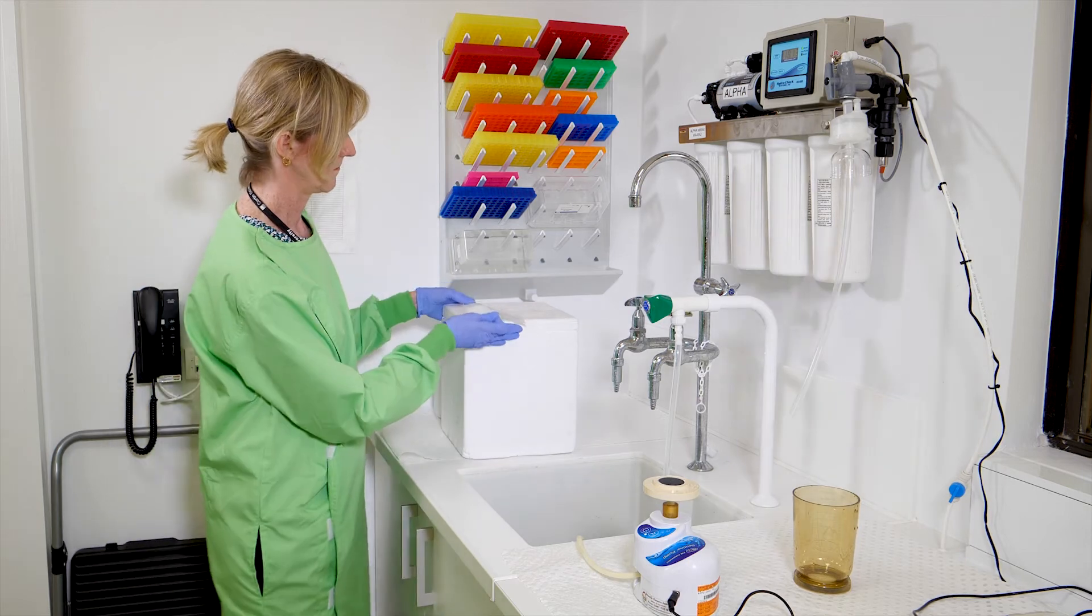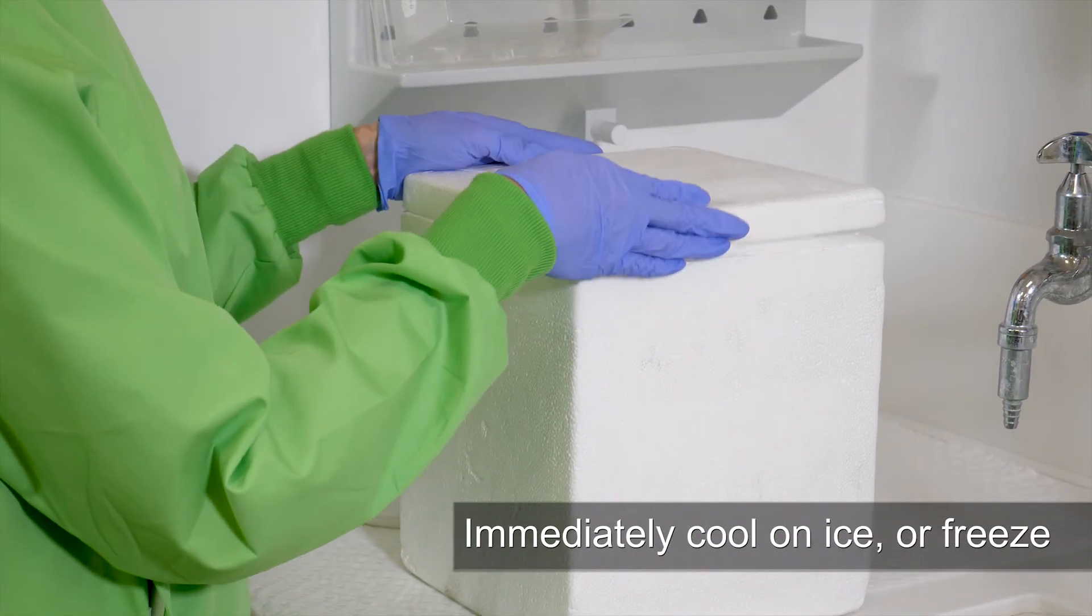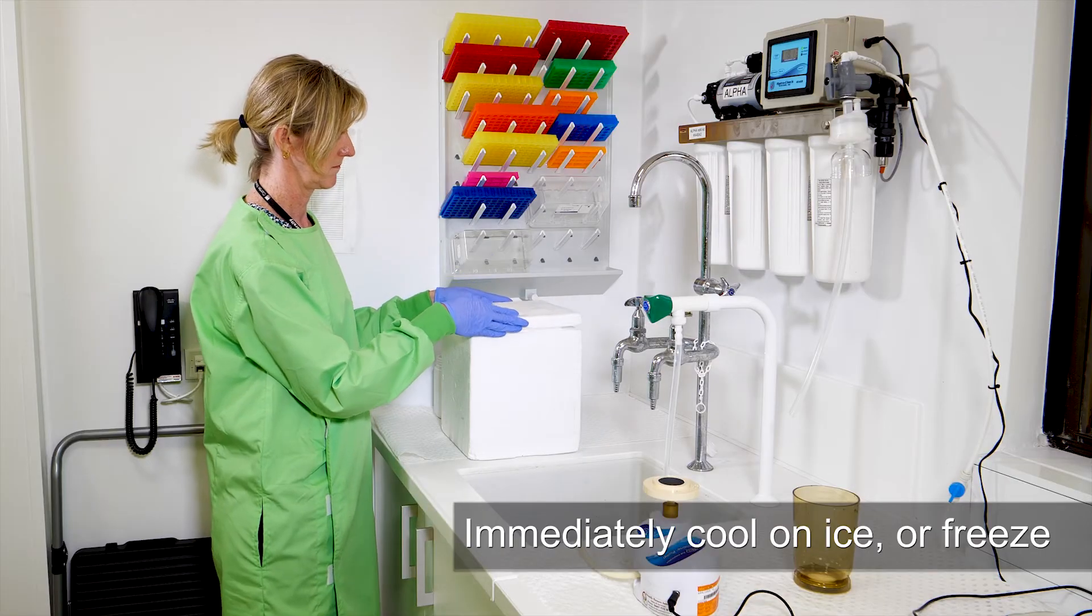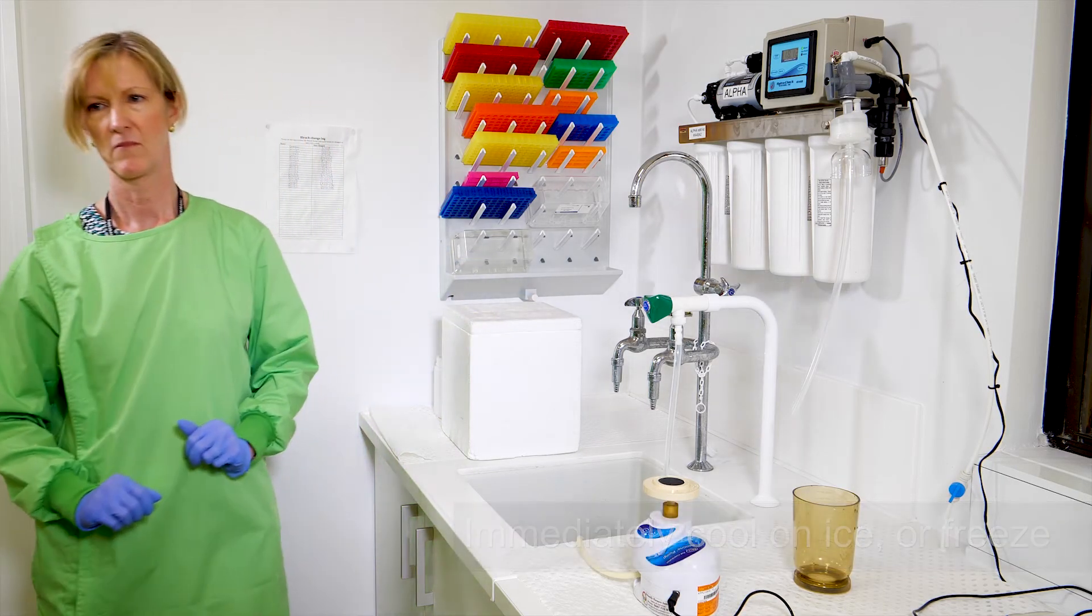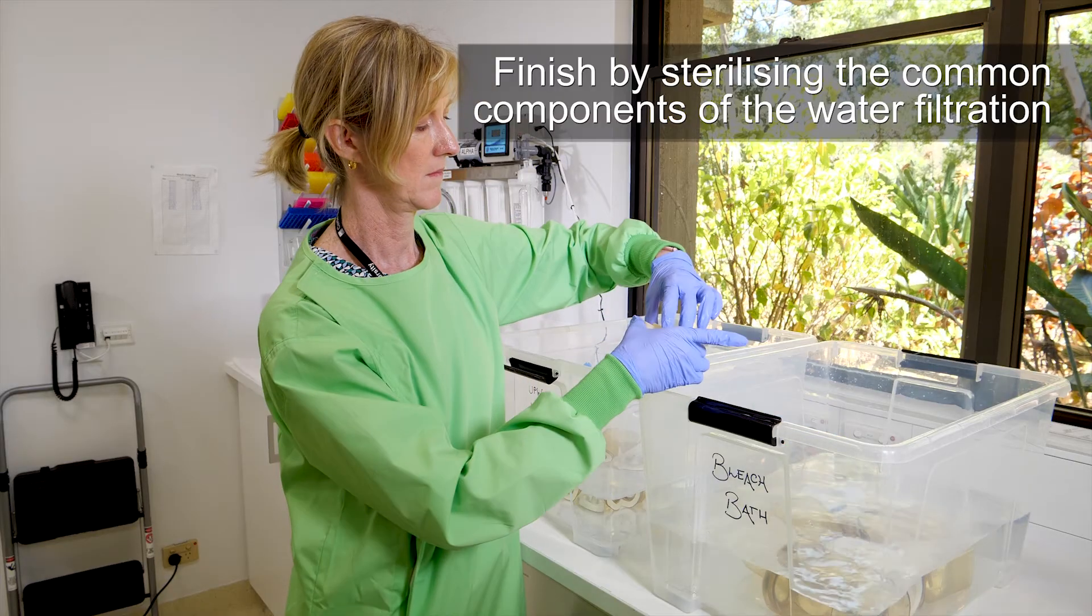It is important that the filter membrane is placed directly into an esky with ice bricks or straight into a freezer. If the filter membranes are not kept cold, then the DNA will degrade. Place the used funnel and filter base back into the bleach tub to soak for 15 minutes.